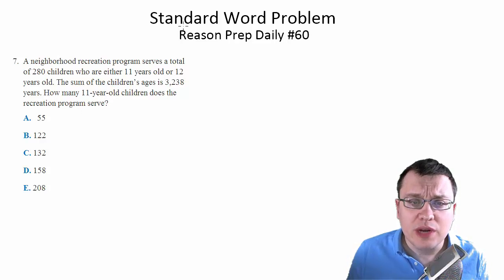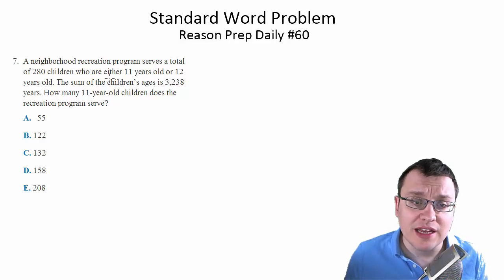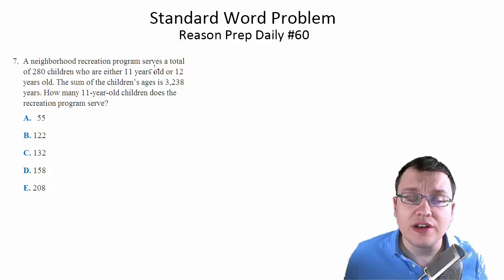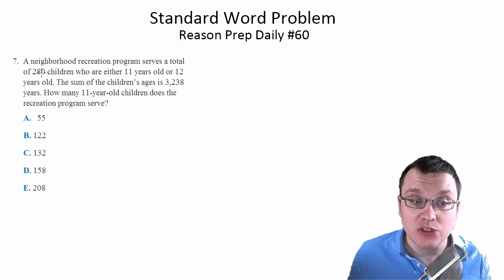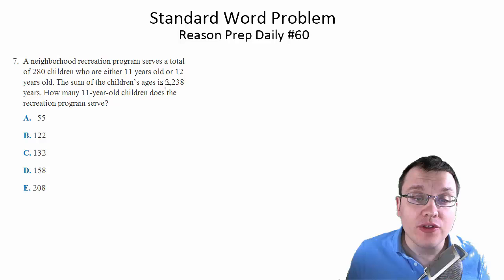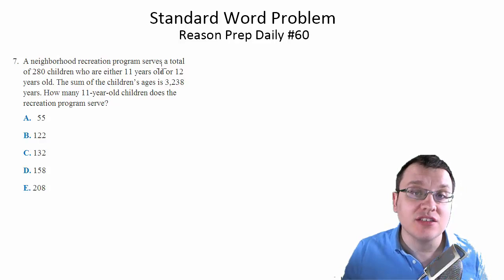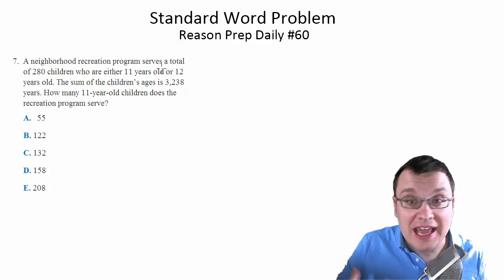This is one of these what I call standard word problems because it's a very familiar type of setup. You're given two different numbers of things. In this case, two different numbers of 11-year-old kids, two different numbers of 12-year-old kids. We know that adds up to 280 total kids. We know that the sum of their ages is 3,238 so that each of these kids has a certain value or a certain age value.